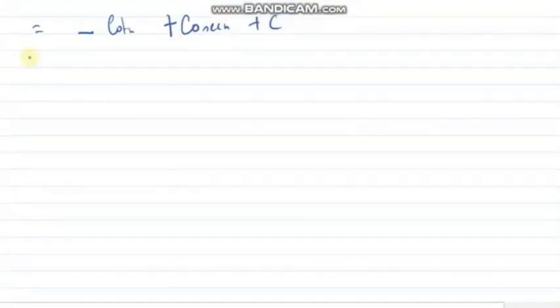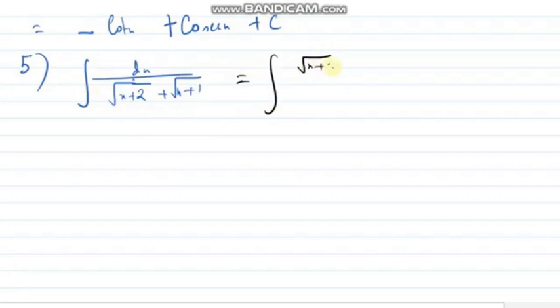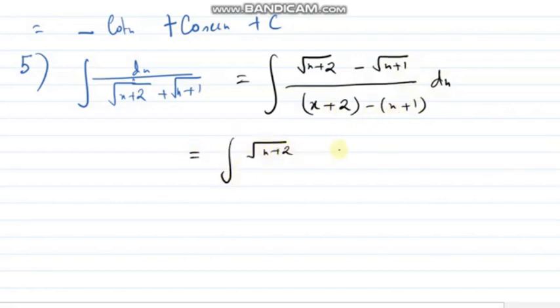We are proceeding towards the fifth sum. Fifth sum is that, integration of dx divided by root of x plus 2 plus root of x plus 1. Simple one. Yes, correct one. So, we will multiply and divide by this term. So, denominator, it will be this one. So, denominator, just check, it will become 1. So, integration of root of x plus 2 minus integration of root of x plus 1.